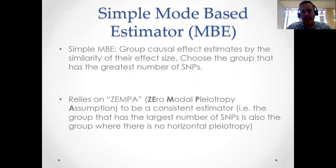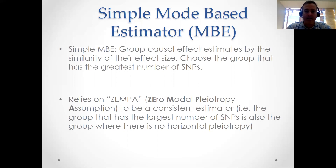This estimator relies on something called ZEMPA, which is the zero-modal pleiotropy assumption. It basically says that the group that has the largest number of SNPs is also the group where there is no horizontal pleiotropy.